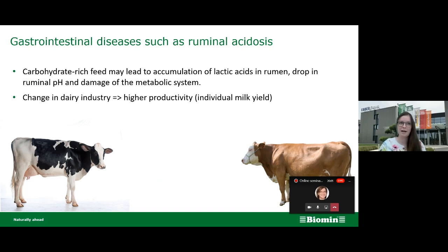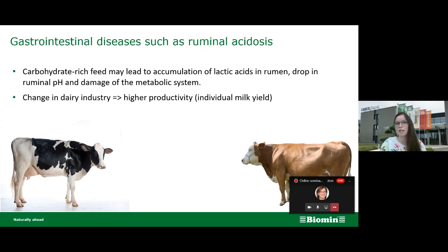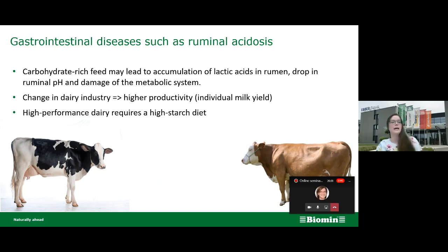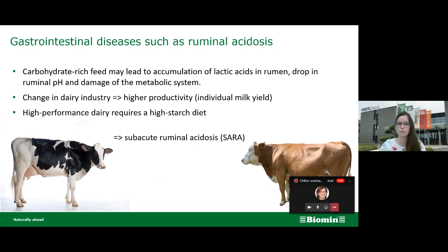We have observed that the number of dairy farms has decreased, but at the same time there has been an increase in individual milk yield per animal. This increase was achieved through genetic selection but also by a change in diets — a shift from forage-based diets to grain-including diets. Nowadays, high-performance dairy cattle require high-starch diets, which again create the potential for subacute ruminal acidosis.